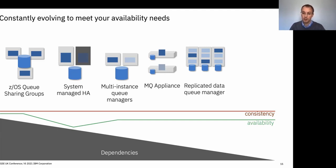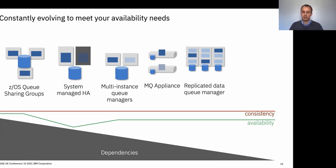So we built a feature called Replicated Data Queue Managers (RDQM), which provides an equivalent capability on Linux. As the diagram illustrates, moving from left to right, the environment constraints reduce over time, so it's much easier to deploy something like RDQM in VMs in different environments — you can do that in the cloud or on-prem versus queue sharing groups being specific to the z/OS platform.